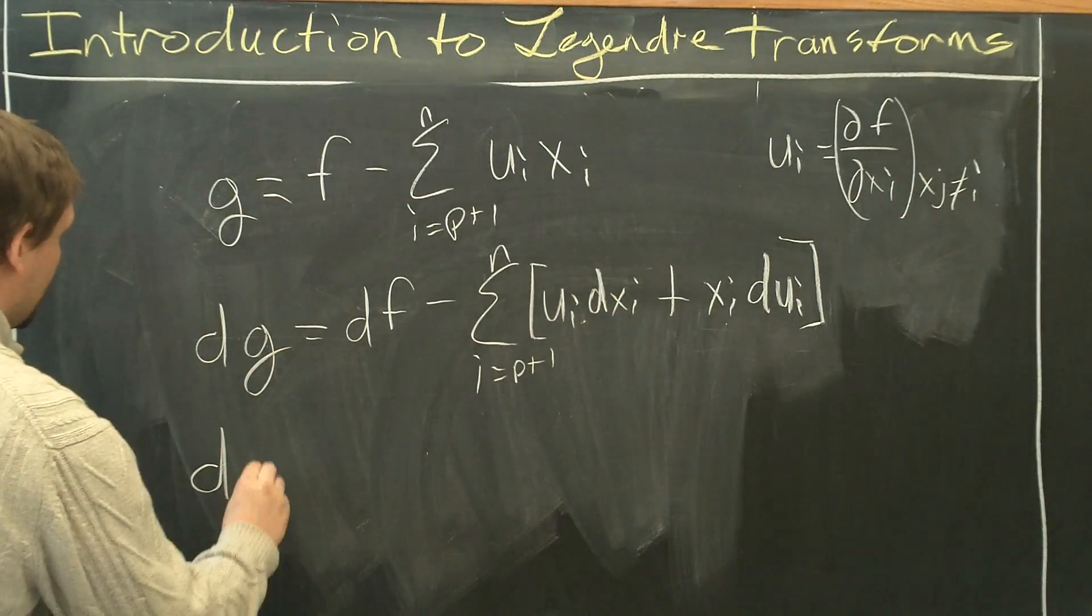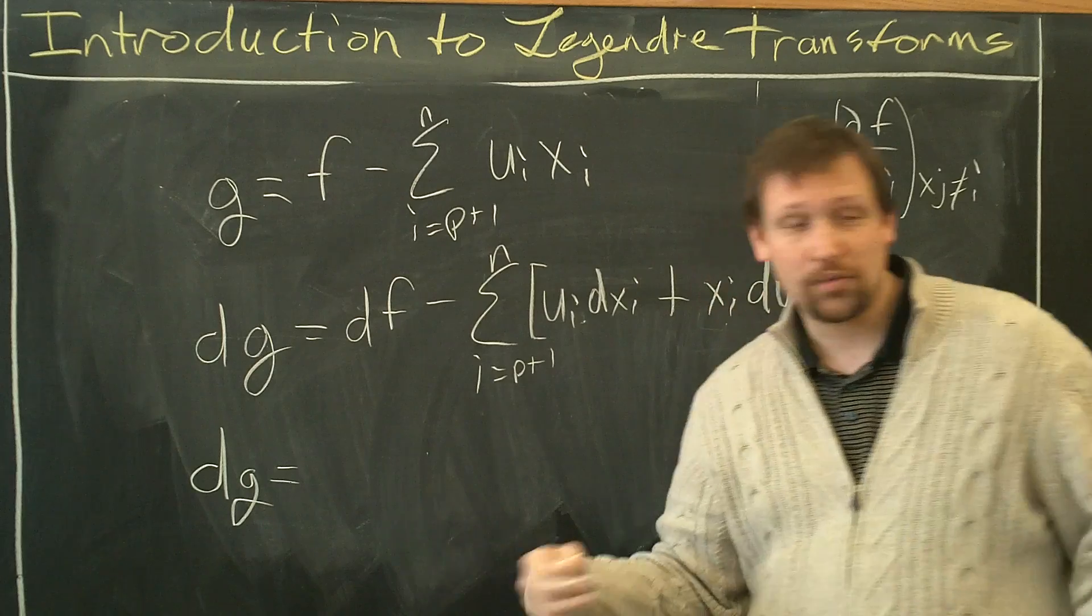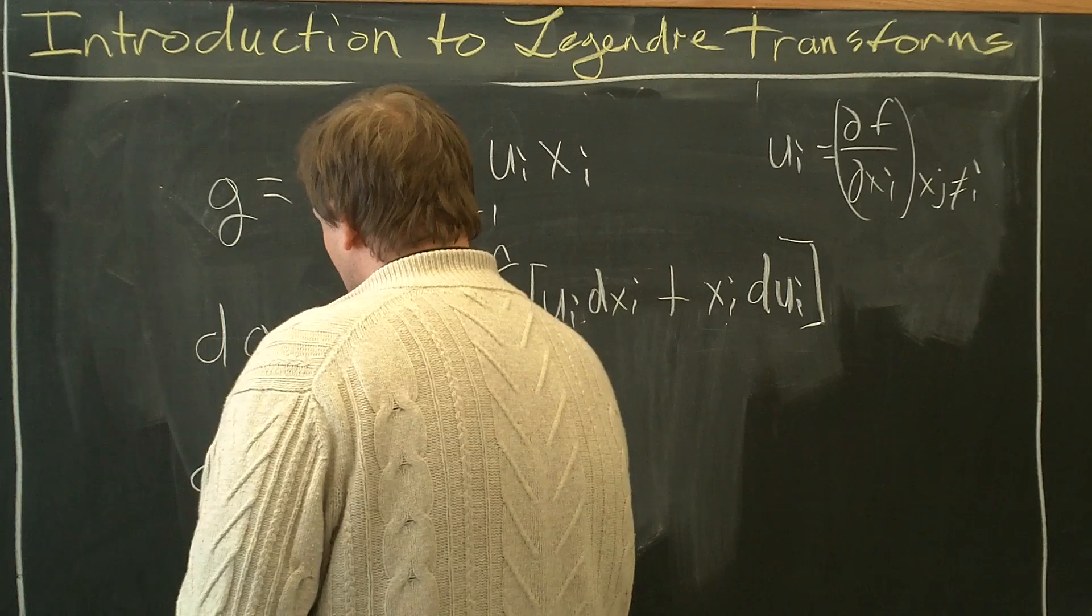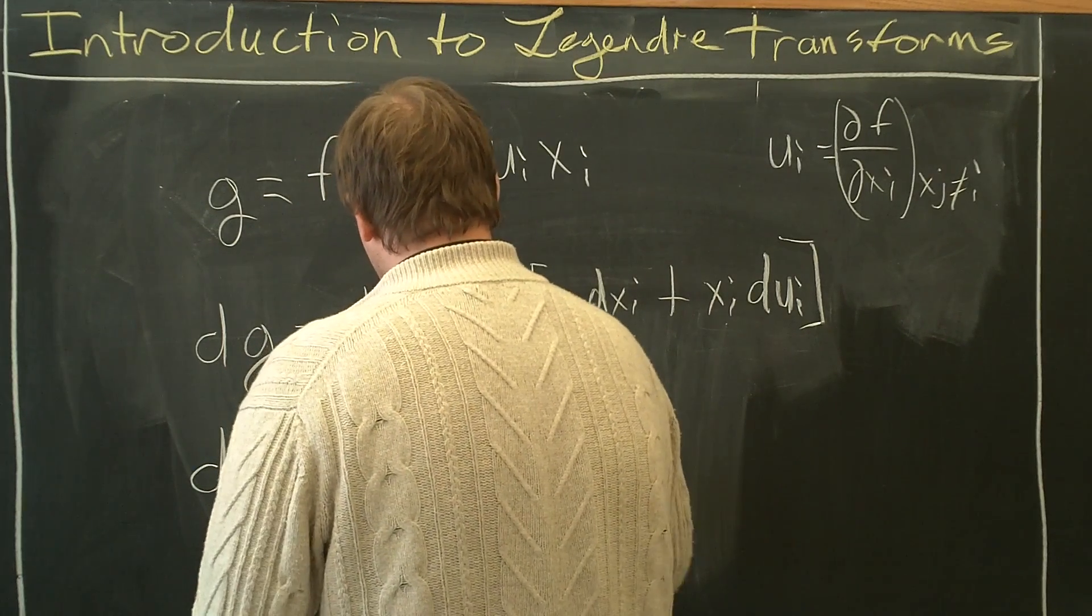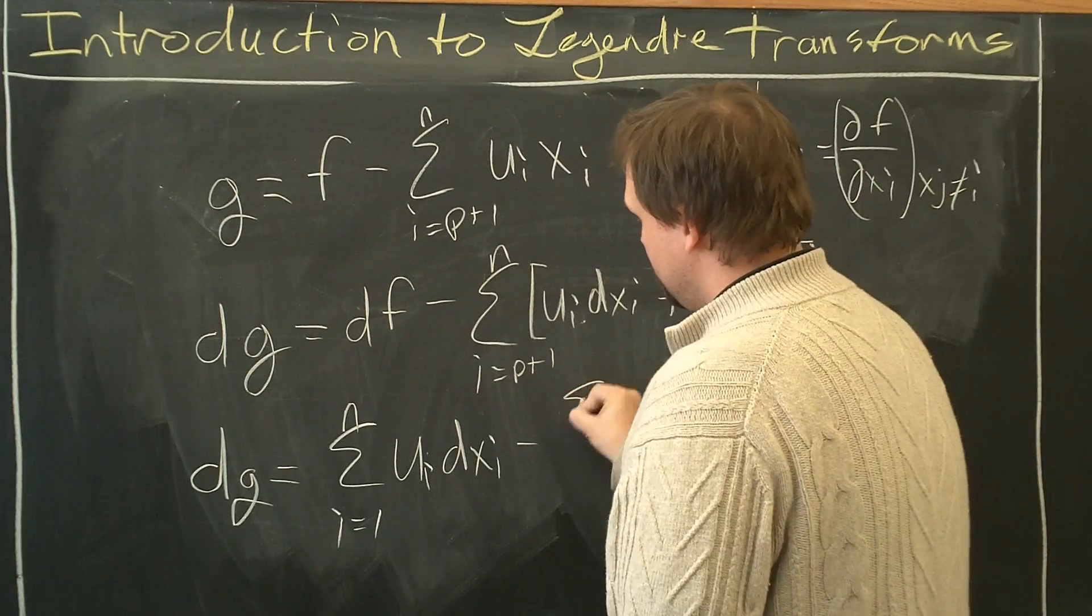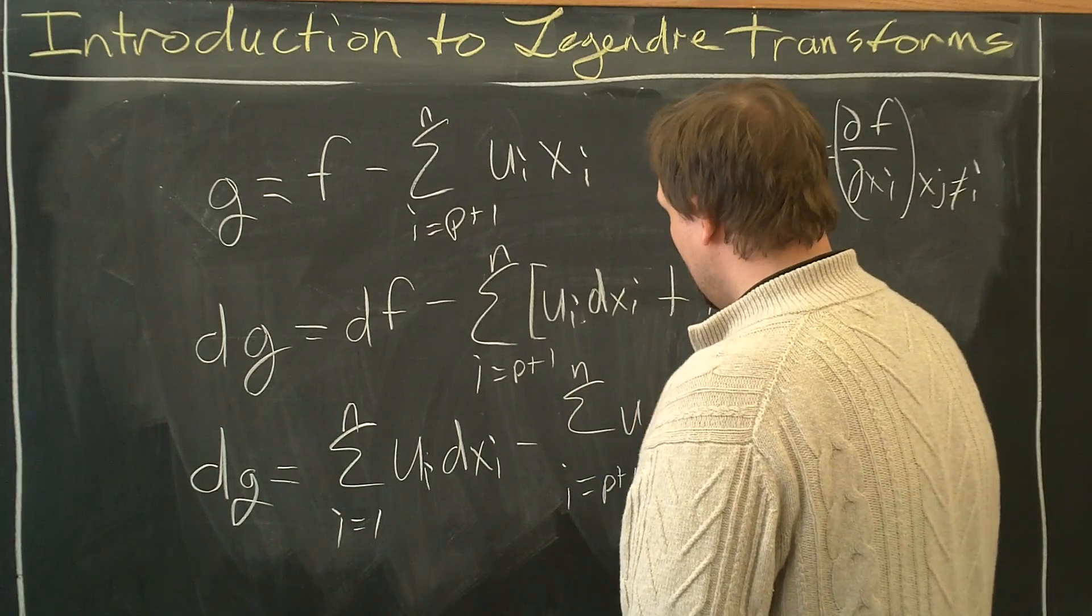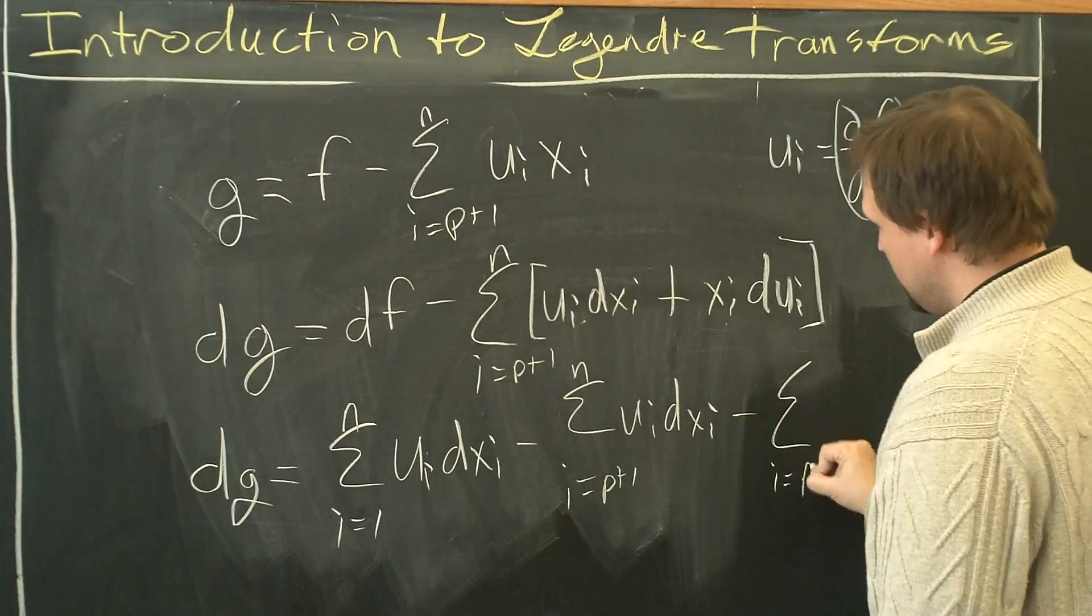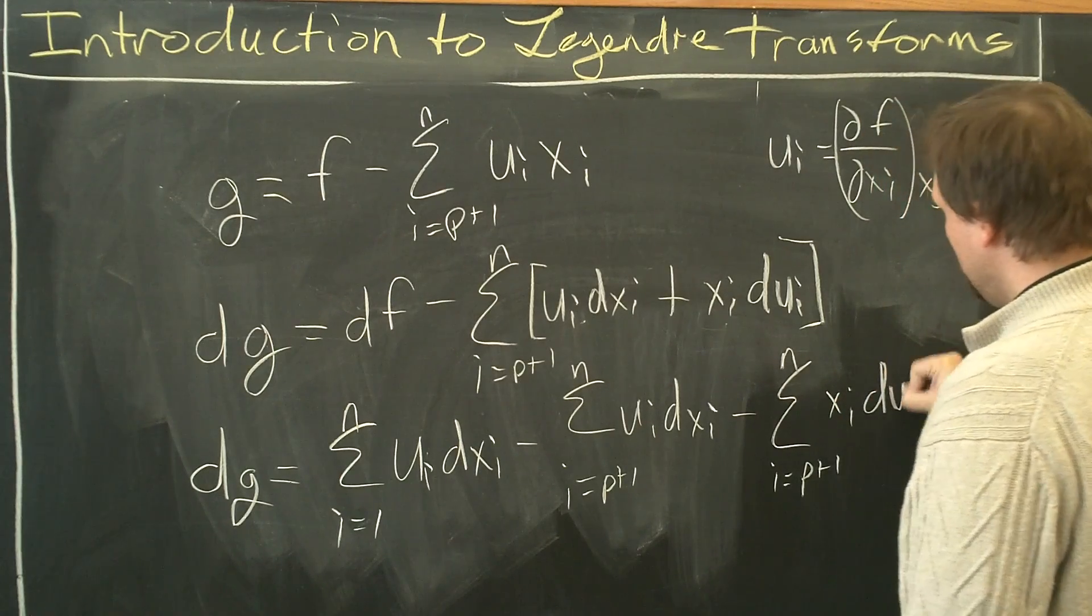We can rewrite this as dg equals df which was what was originally df. Okay, df is sum i equals 1 to n of ui dxi minus summation i equals p plus 1 to n of ui dxi minus summation i equals p plus 1 to n of xi dui.